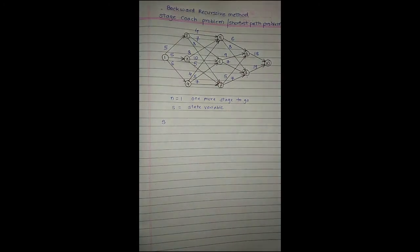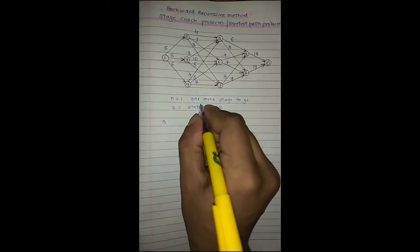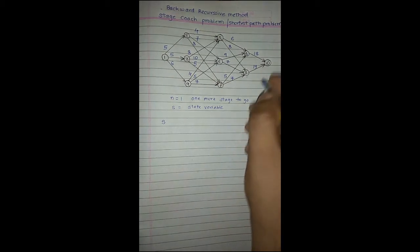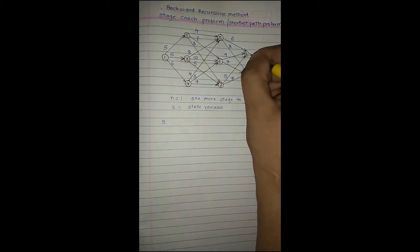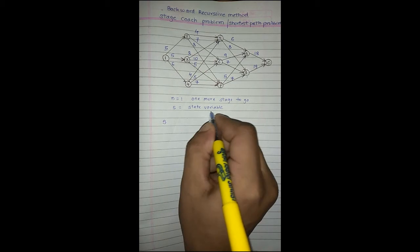When we are one more stage away from city 10, either we are at city 8 or city 9. So the state variable S will be either 8 or 9.